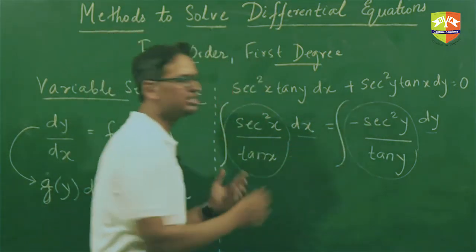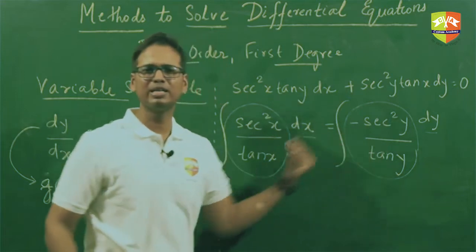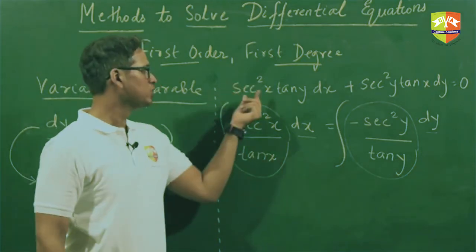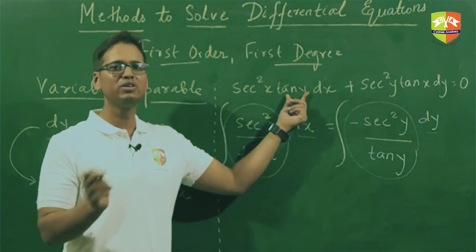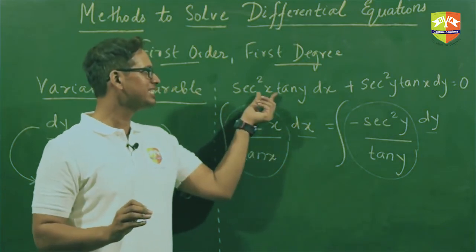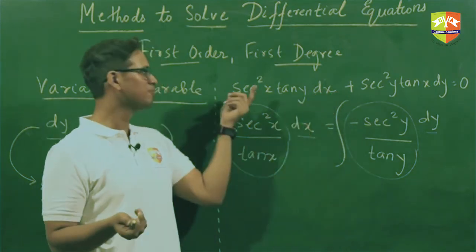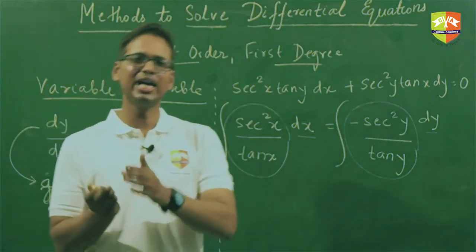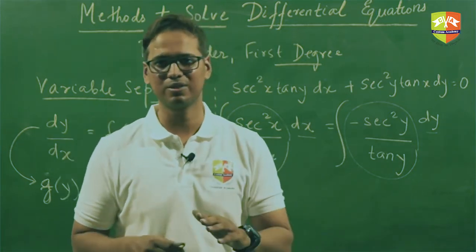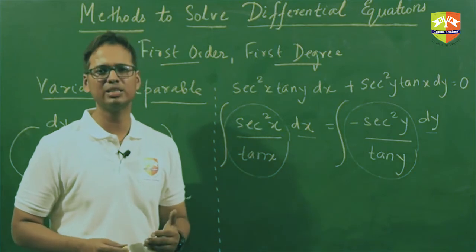By separating the variables, I have made a ground to start integration on both sides. Someone might ask why we need to separate variables before integrating. The reason is that y is dependent on x — you cannot treat tan(y) as a constant while integrating with respect to x. So we must separate the variables first.